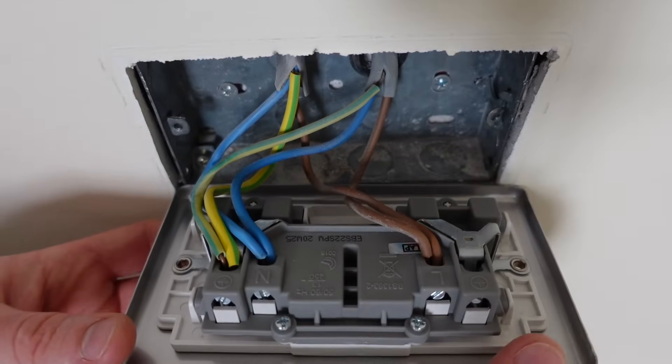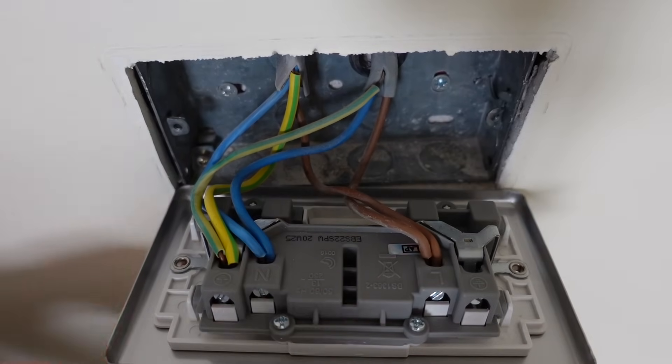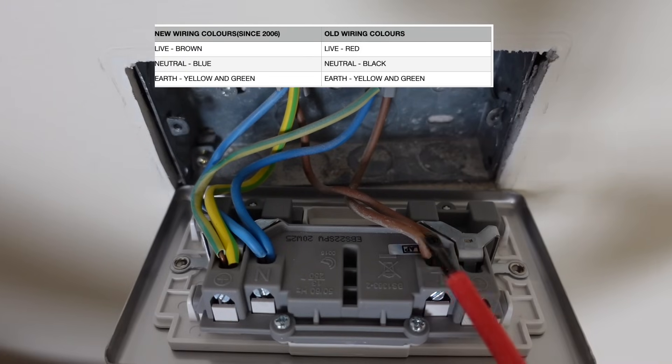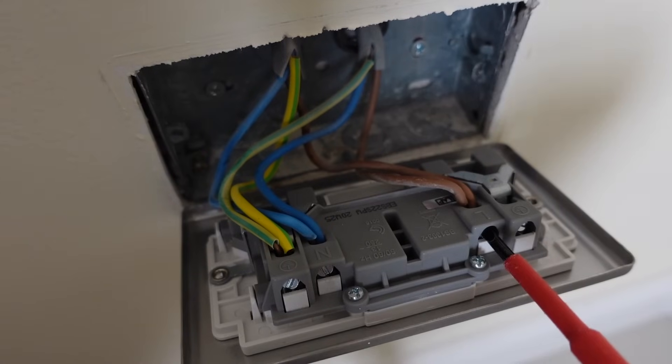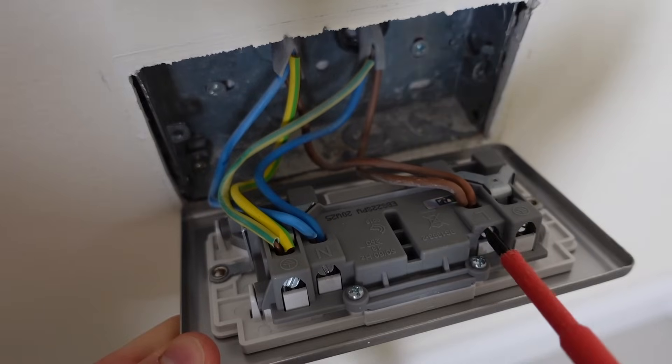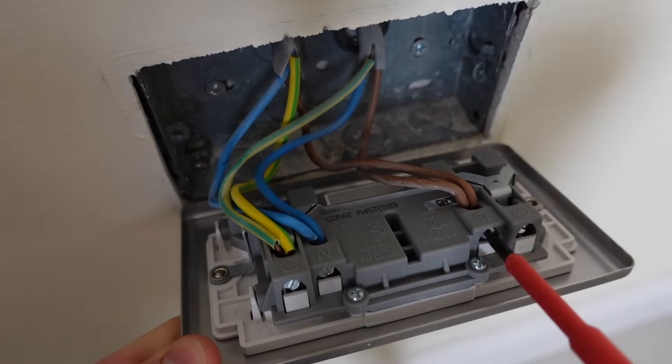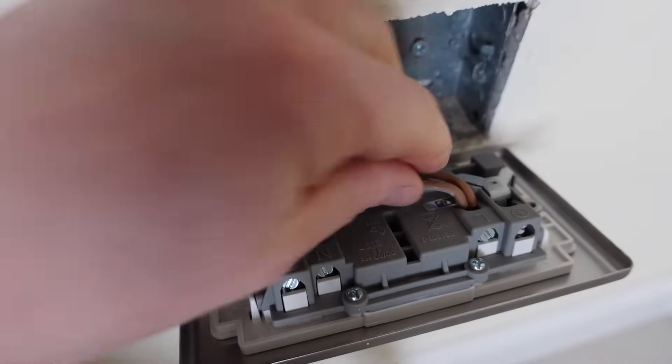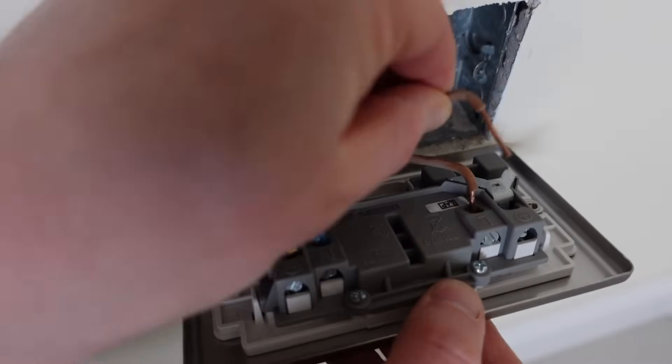Just make sure you've got good access to the back of the socket and begin to undo some of the terminal screws. In this case we have the new color wiring so we've got brown for live, blue for neutral and green and yellow for earth or CPC. So first of all we'll undo the terminal screw on the live wire, that's the brown one, just undo that little terminal screw and then you'll be able to pull the wires out the way.